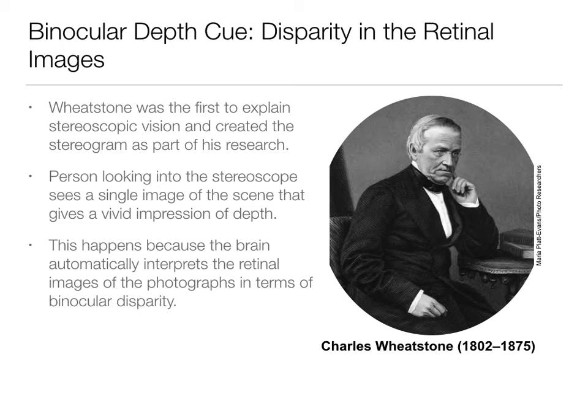To really understand how they determined which of these hypotheses is right, we first have to talk about some of the tools they used. Wheatstone was the first guy to really try to figure out how this information from two eyes goes together, and he created a stereogram. You have seen stereograms many a time — you just didn't know they were stereograms. Most of the time we see these in a stereoscope. They're two separate images that by themselves don't have depth; they're 2D images. But when you put them together through a stereoscope, there's this impression of depth, and again, this is the brain automatically interpreting this based on binocular disparity.